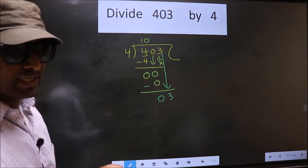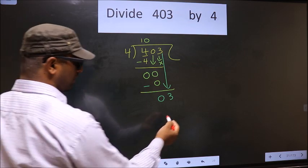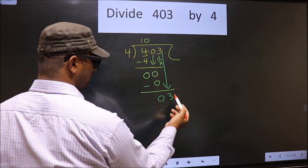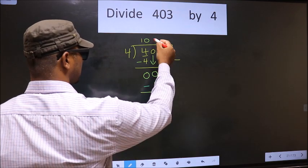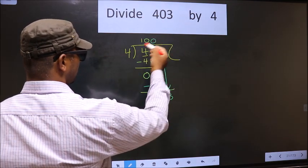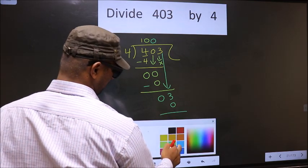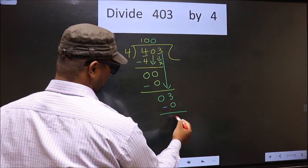Instead what you should think of is same thing. What should we write here? If we write 4 that is larger than 3. So, what we do is we take 0 here. So, 4 into 0, 0. Now, you subtract 3 minus 0, 3.